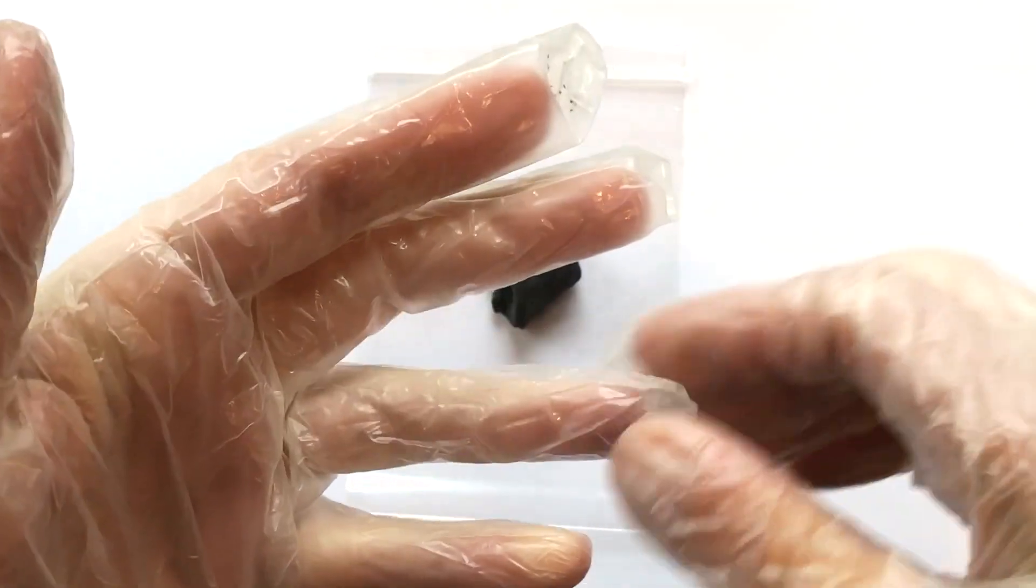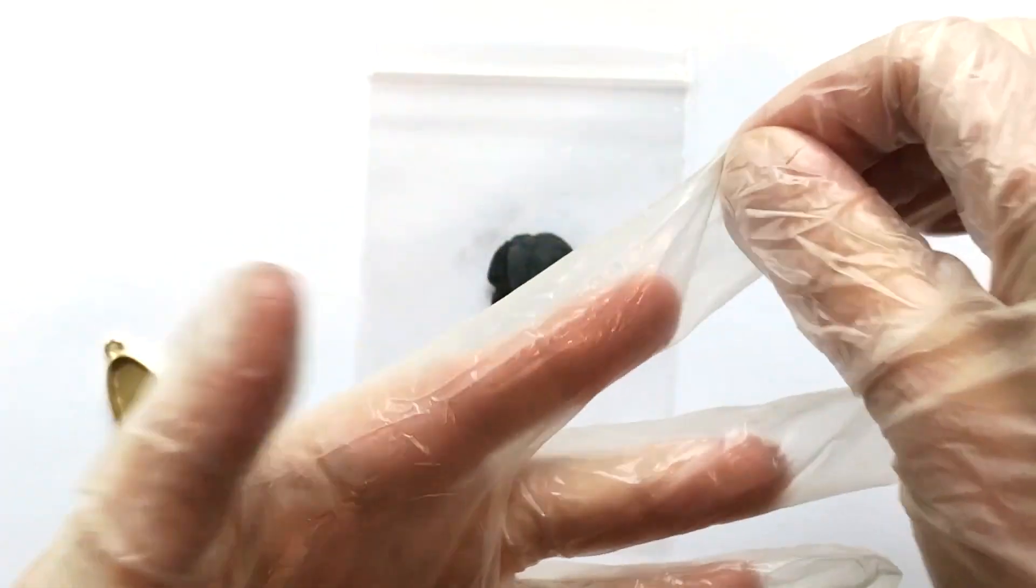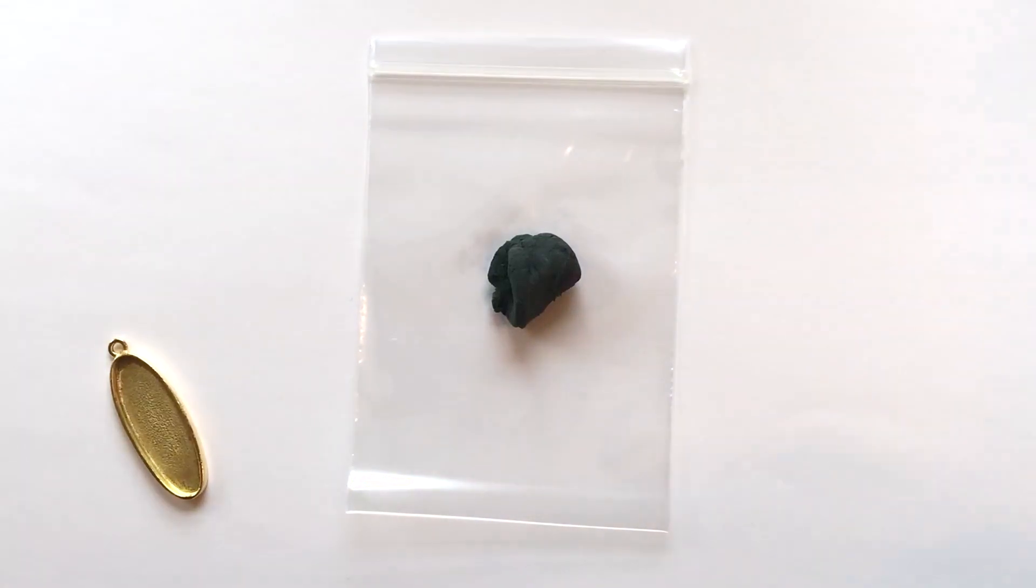And then you just go ahead and pull on the fingers, and with that baby powder underneath, it makes it really easy for these gloves to come off and not turn inside out. Then you can just reuse the gloves over and over again.